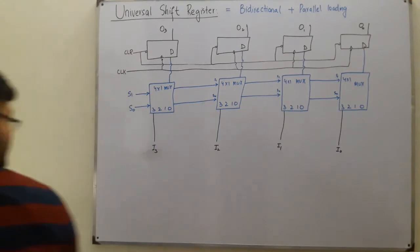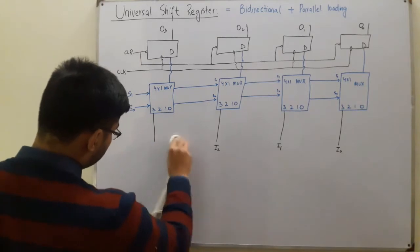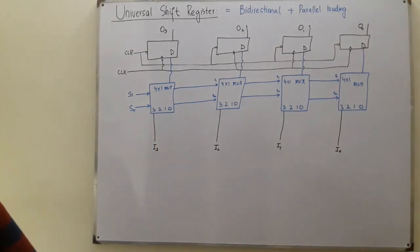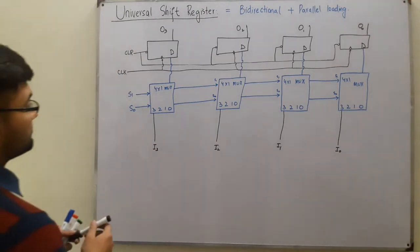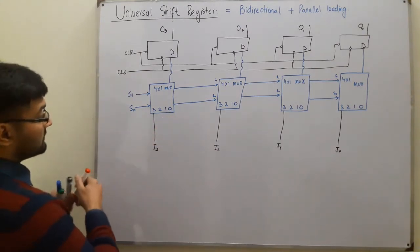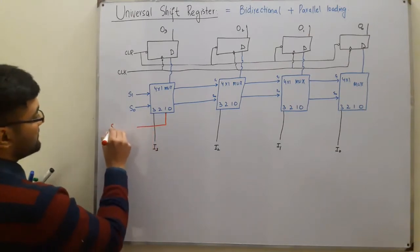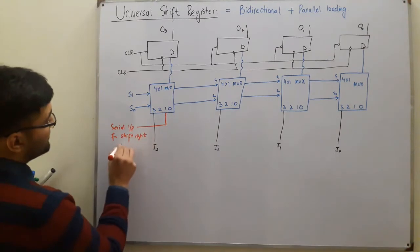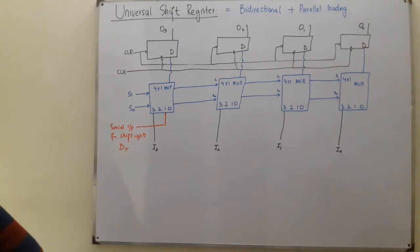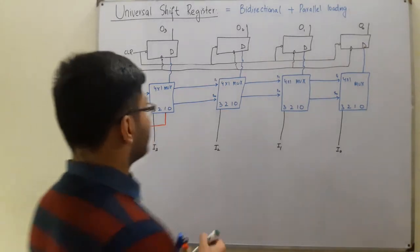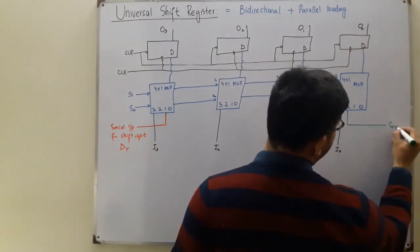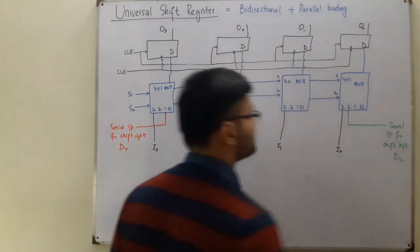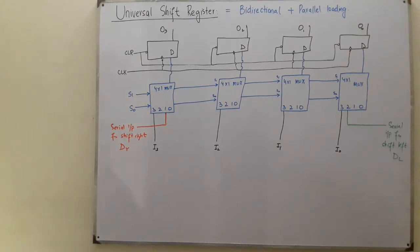Input 1 is the serial input for shift right — in the bi-directional video we called this DR. Input 2 is the serial input for shift left, which in the previous video we represented as DL.